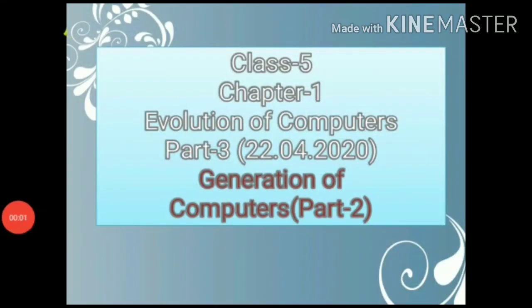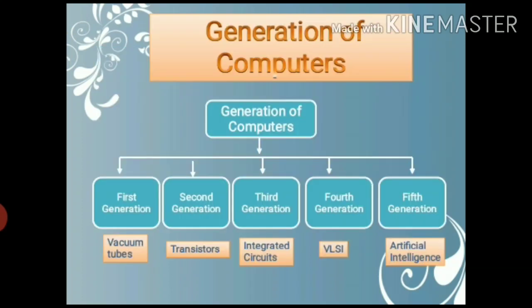Today we are discussing other generations of computers. Let's begin with the web chart. In the web chart, there are 5 generations: 1st, 2nd, 3rd, 4th, and 5th generation. It's mentioned here which technology was used in each generation. In 1st generation, vacuum tubes. In 2nd generation, transistors were used. In 3rd generation, integrated circuits. In 4th generation, VLSI. And in 5th generation, artificial intelligence.